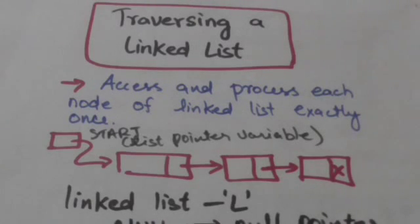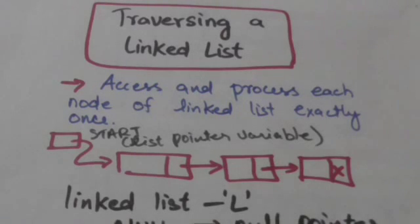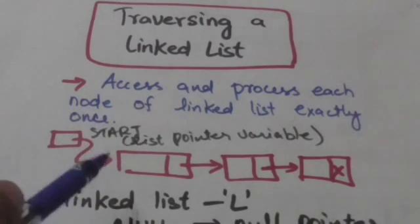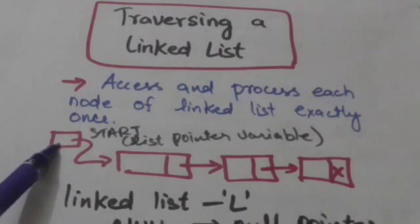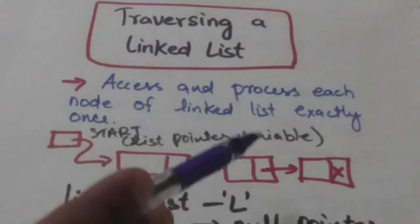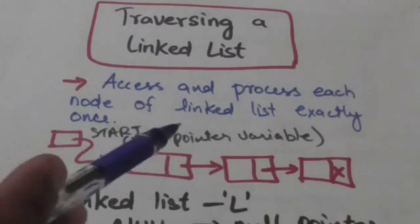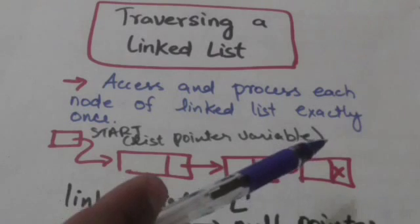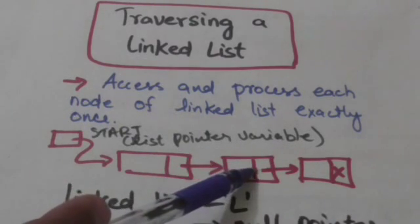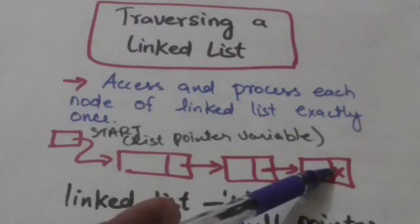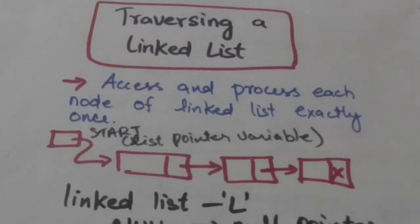Hello friends, welcome back. In this tutorial we will study about traversing a linked list. Traversing a linked list means to access and process each node of the linked list exactly once. The first node is accessed and processed; we get its address from the list pointer variable. From the first node we get the address of the second node, then the second node is accessed and processed, and so on up to the last node. The next pointer field of the last node contains a null pointer, which is an invalid address.